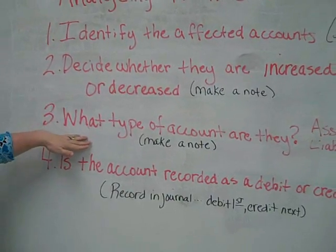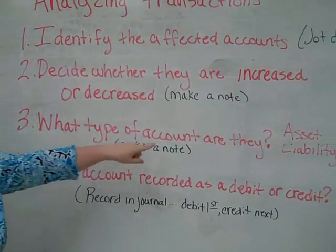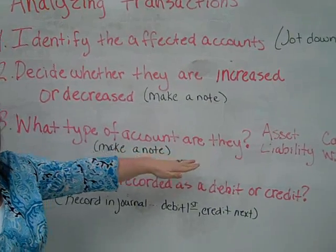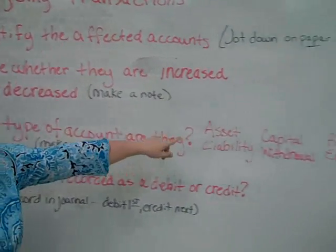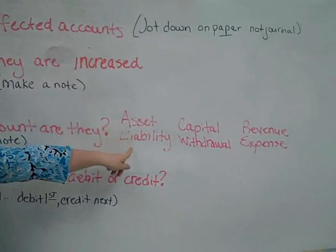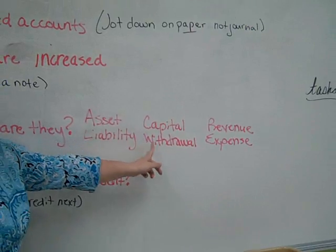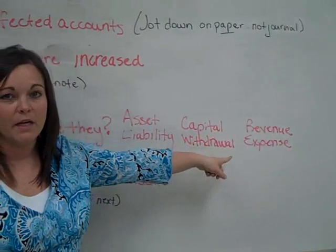Number three: you need to decide what type of account they are, and make a note of this. Is this an asset, a liability, is it capital, withdrawals, is it a revenue or an expense?